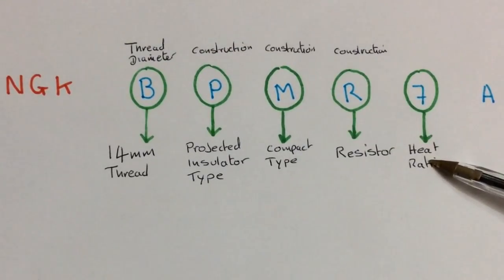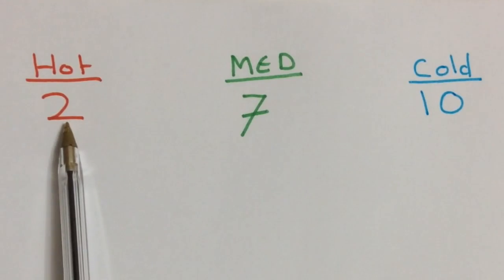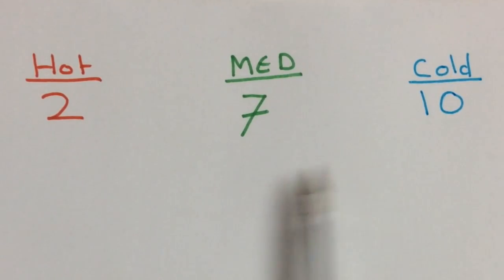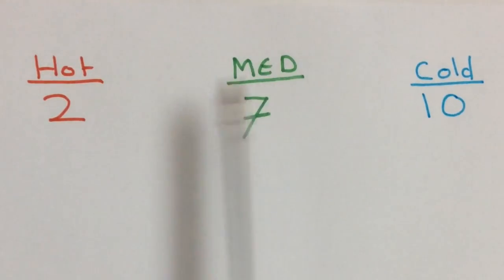7 relates to its heat rating. So its operating temperature. 2 being hot, running hot temperature, and 10 running as a cold temperature. Our plug runs at a sort of medium heat.